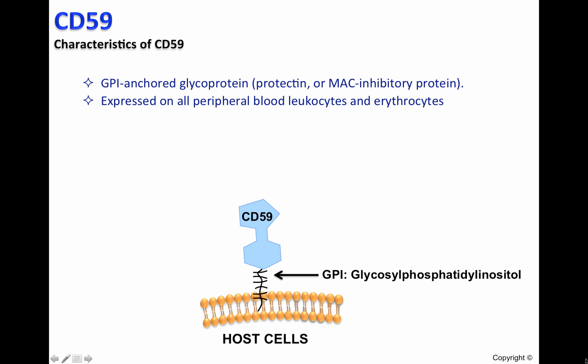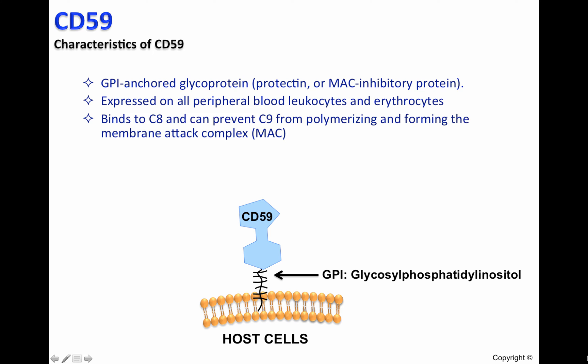CD59 is expressed in all peripheral blood leukocytes and erythrocytes, and binds to C8 and can prevent C9 from polymerizing and forming the membrane attack complex. Basically, CD59 protects host cells from complement-mediated attack.